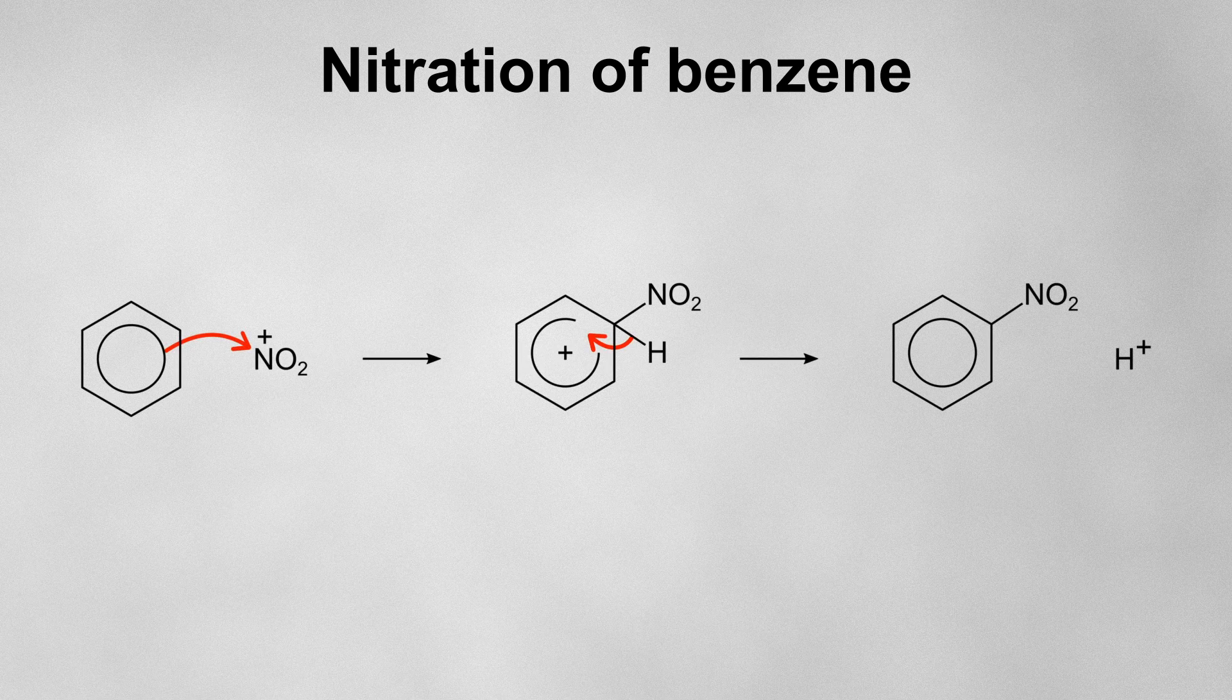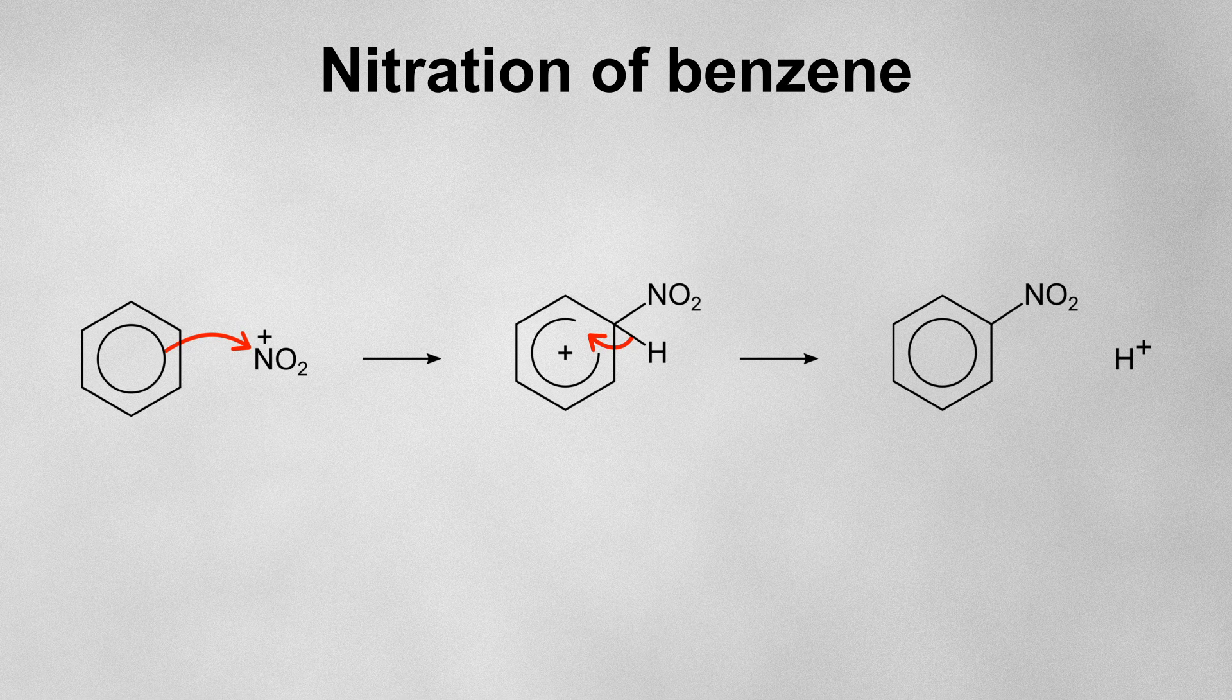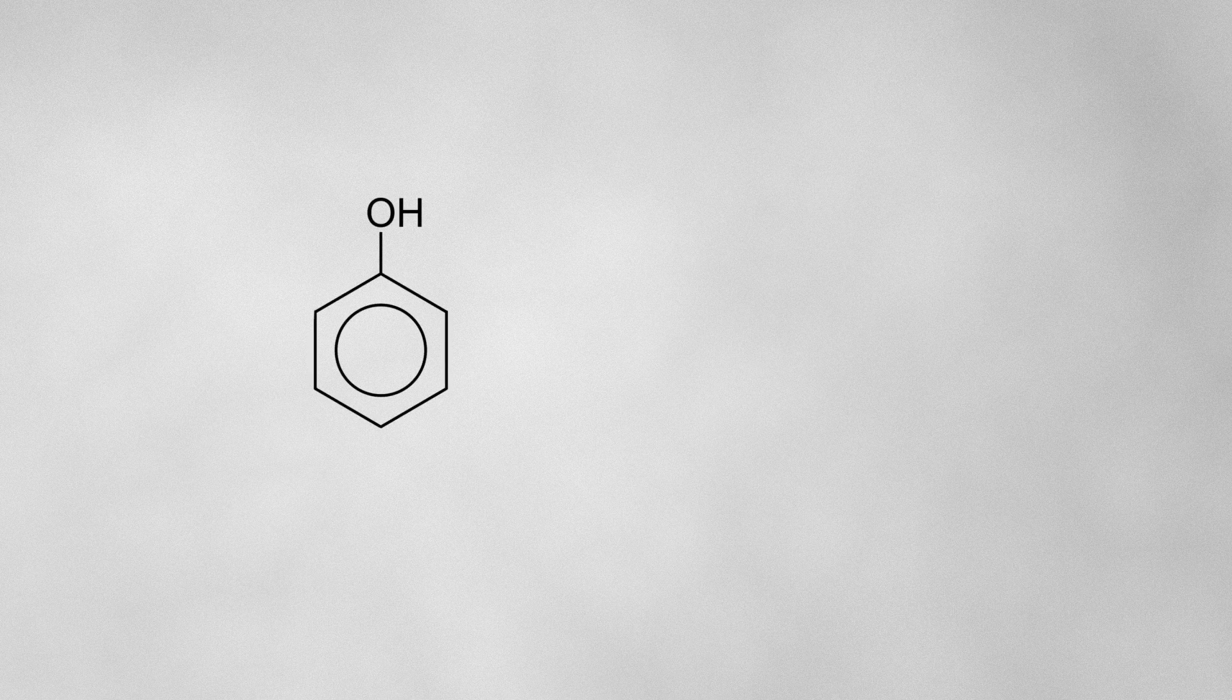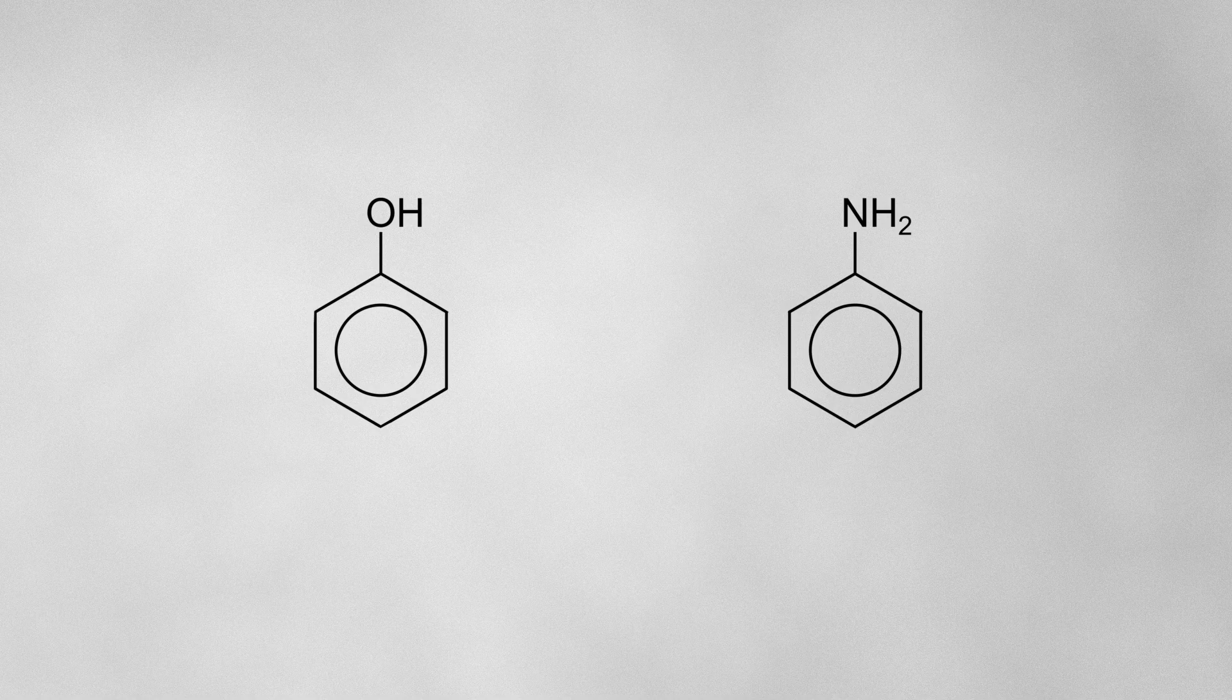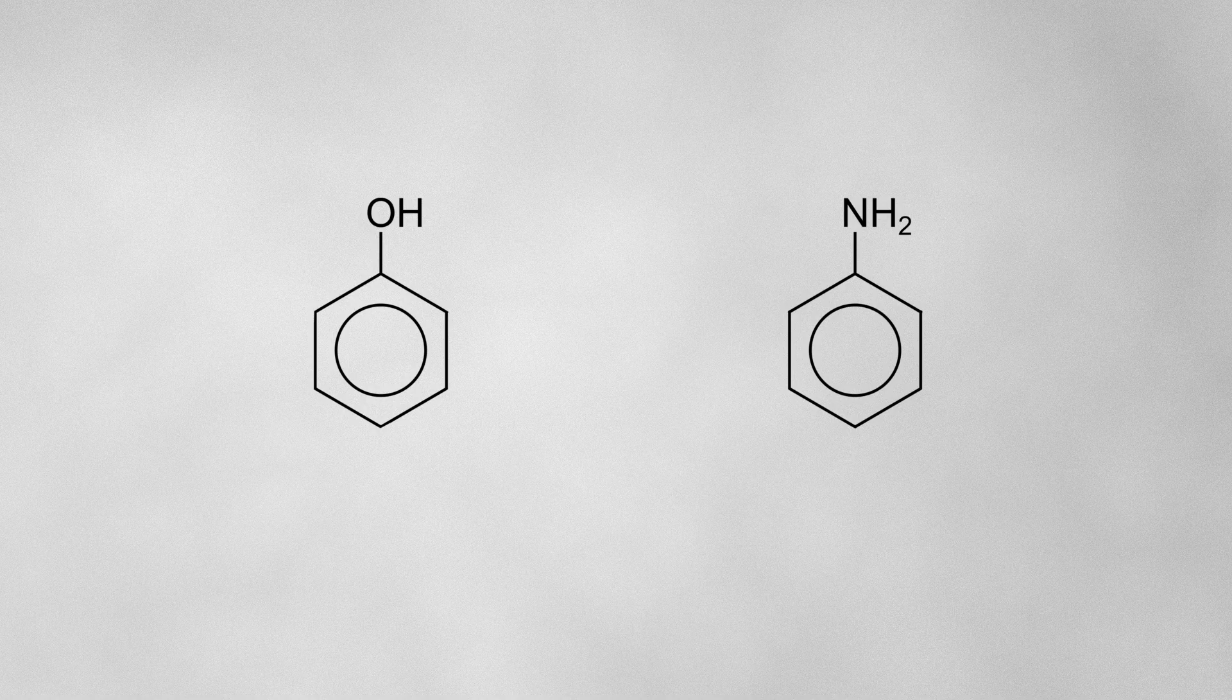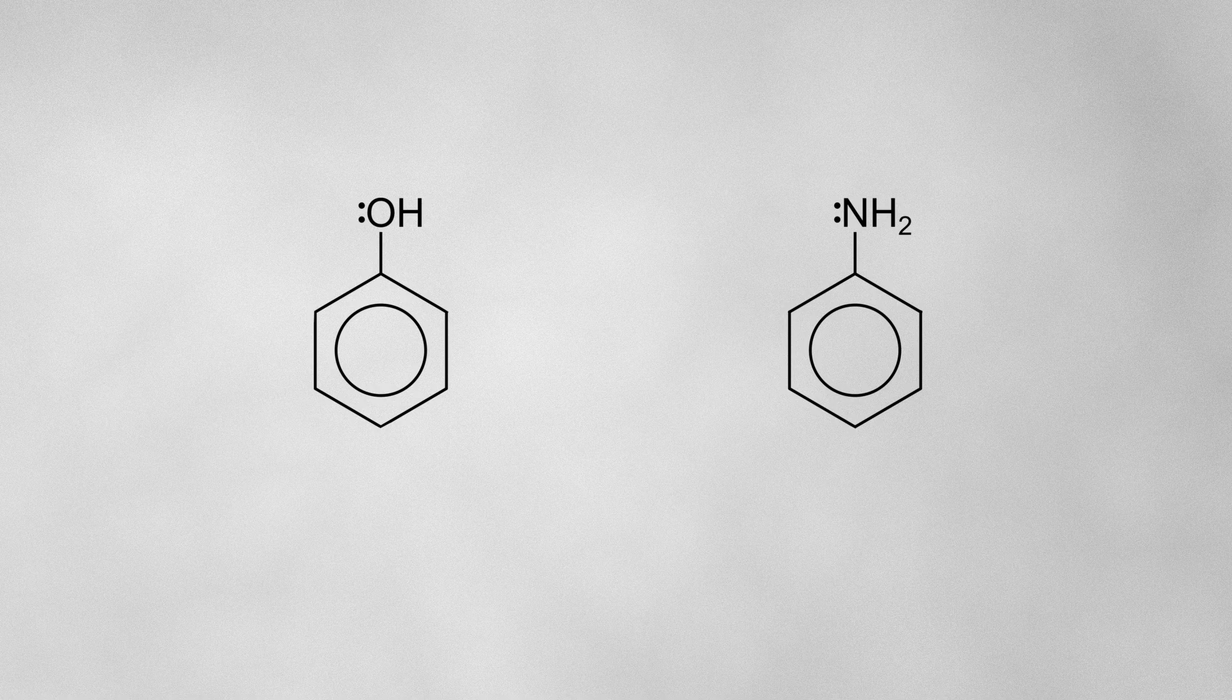Hopefully, it's now easy to see how these reactions are pretty much all the same. One final point to add is that if we're using phenol or phenylamine instead of benzene, we don't need to use a catalyst at all. This is because both phenol and phenylamine are more reactive than benzene. This can be explained by the fact that they each possess a lone pair of electrons that can be donated to the delocalized pi system, increasing the electron density in the ring.